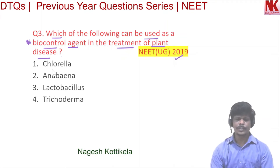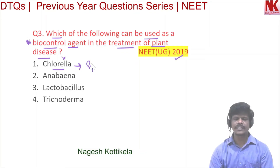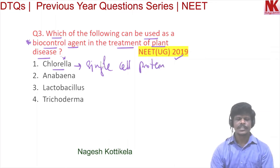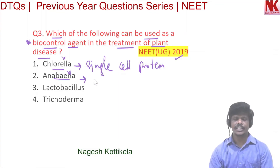Option one is Chlorella — this is wrong because Chlorella is not a biocontrol agent; it is used as single cell protein. The second option is Anabaena — this is also wrong because Anabaena is not a biocontrol agent; it is a biofertilizer.